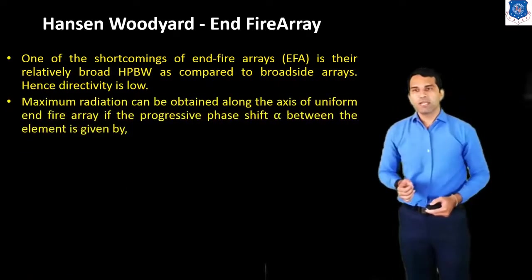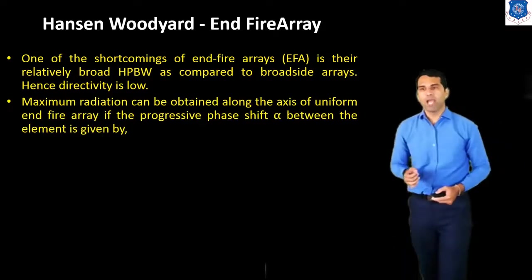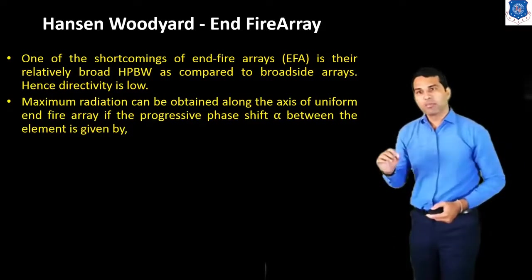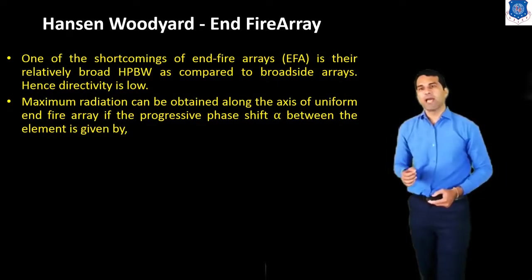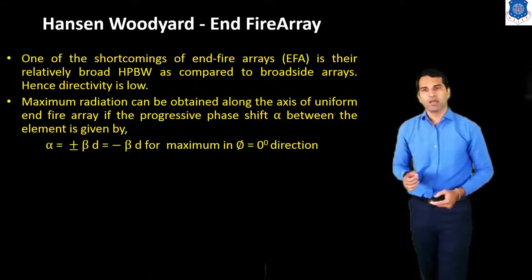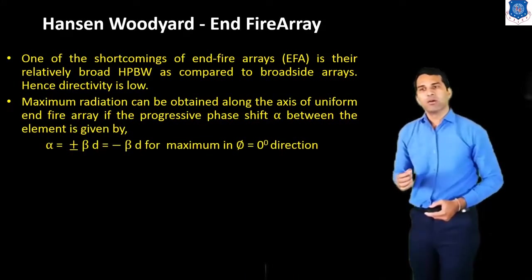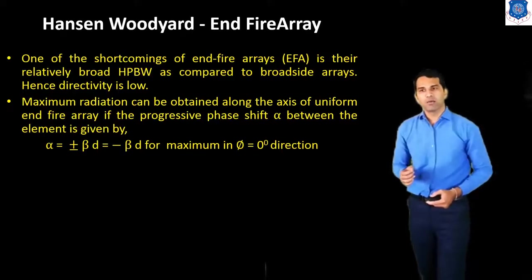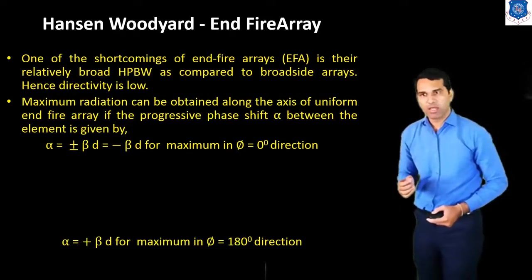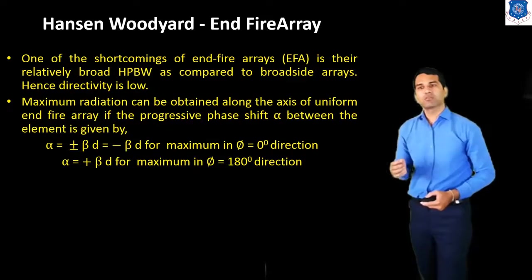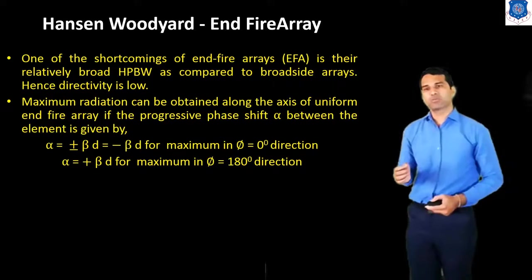Maximum radiation can be obtained along the axis of a uniform Endfire Array if the progressive phase shift alpha between the elements is given by alpha equals plus or minus beta-d. Specifically, alpha equals minus beta-d for the maximum in the phi equals zero direction, and alpha equals plus beta-d for the maximum in the phi equals 180 degrees direction.